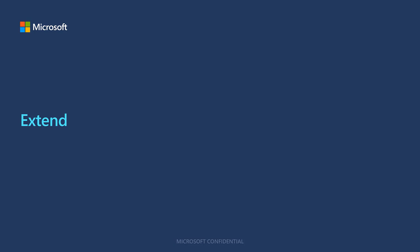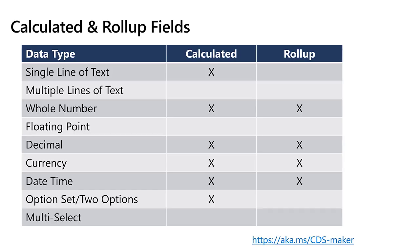Now let's talk about when it's time to extend these entities or create your own entity. Calculated and rollup fields are very underutilized in the Common Data Service. What they allow you to do is real-time aggregation within a record with calculated fields, and aggregation and summarization across records with rollup fields. Calculated and rollup fields apply to many different types of data types, and on this slide you can see the types of fundamental data types for fields and where calculated and rollup fields apply.